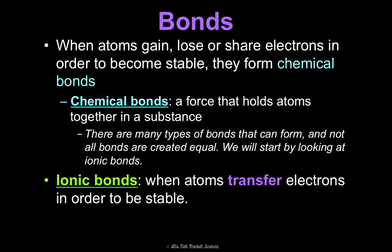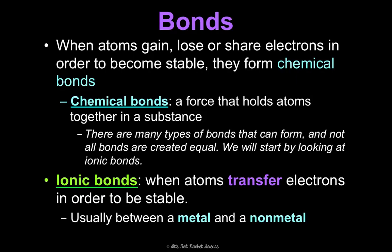Ionic bonds are the type of chemical bond that occurs when atoms transfer electrons in order to be stable. It's usually happening between a metal, like sodium, that's going to give up electrons, and a non-metal, like chlorine, that's going to gain electrons — so there's a transfer. Remember the picture of the arrow from the sodium to the chlorine. When this transfer happens, we get the formation of something called ions.